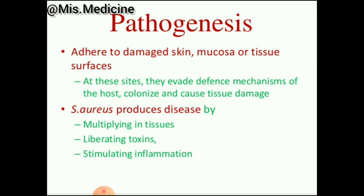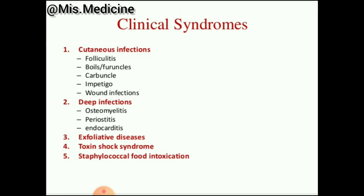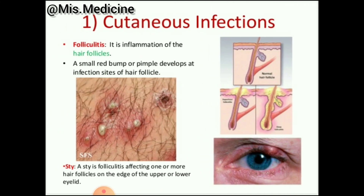In pathogenesis, bacteria adhere to damaged skin, mucosa, or tissue surfaces. At these sites they evade the defense mechanisms of the host, colonize, and cause tissue damage. Staphylococcus aureus produces disease by multiplying in tissues, liberating toxins, stimulating inflammation, and hypersensitivity causes some clinical syndromes.